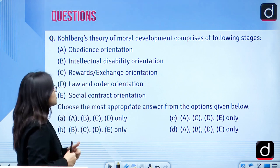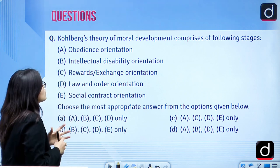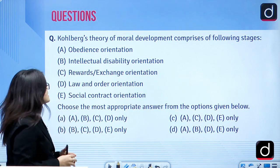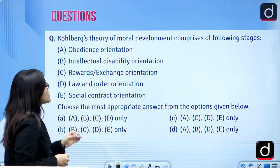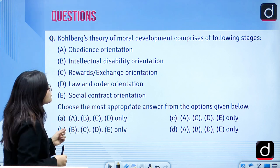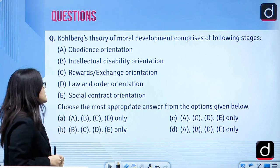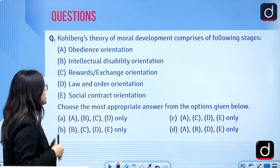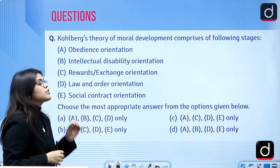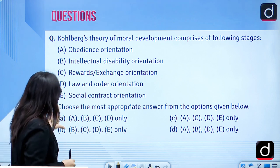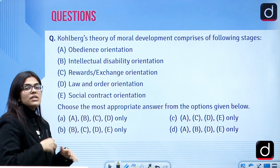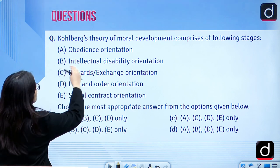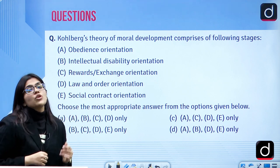This is the first question right in front of you. The question says: Kohlberg's theory of moral development comprises of the following stages — obedience orientation, intellectual disability orientation, rewards exchange orientation, law and order orientation, social contract orientation. It is an MCQ type question and you have to choose which all stages are there in Kohlberg's theory.